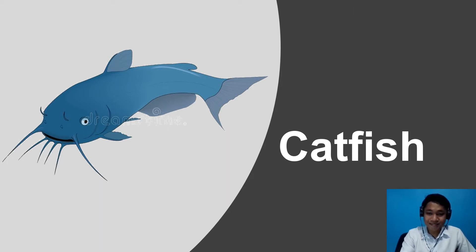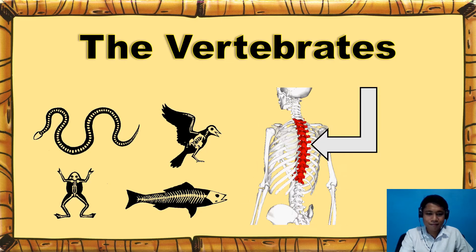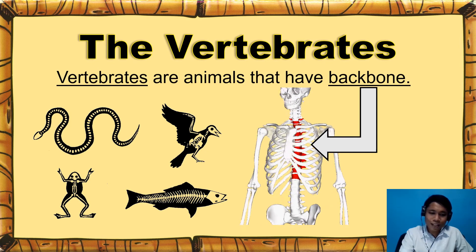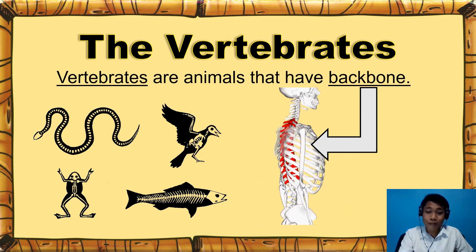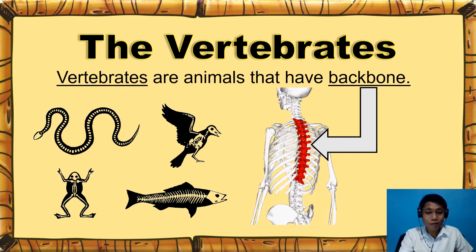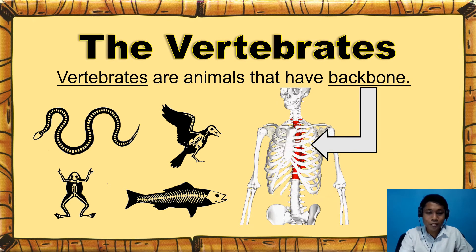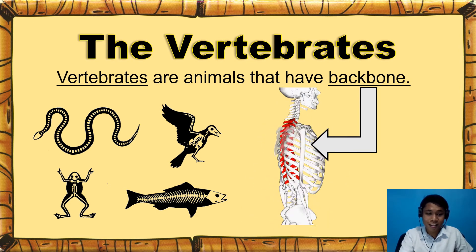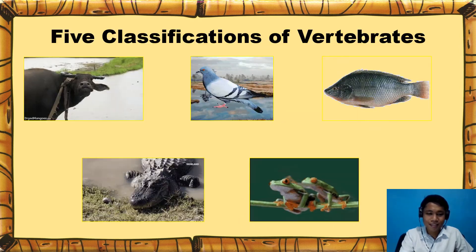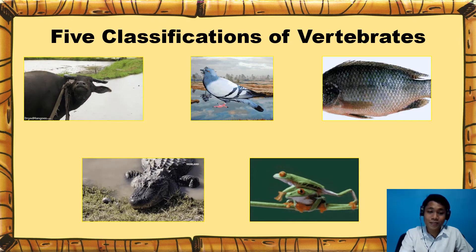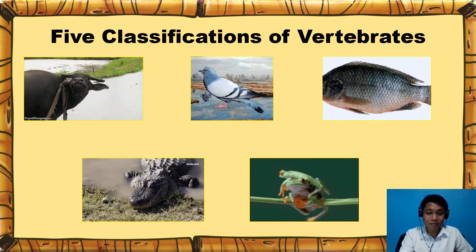Did you enjoy our game? Did you know that those animals are what we call vertebrates? Vertebrates are animals that have a backbone. Their backbones support and protect their spinal cords and their bodies. Vertebrates are grouped according to their common characteristics.